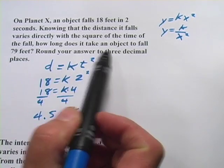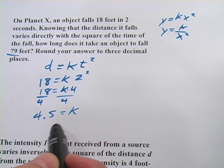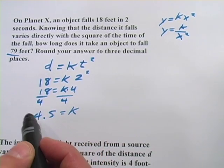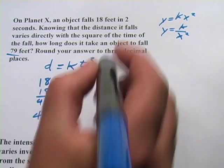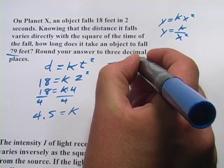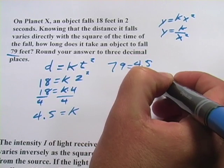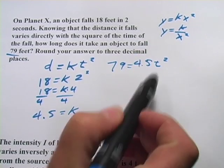The second part of this problem, it says, How long does it take an object to fall 79 feet? So now that we have k, let's plug that back in. In this case, we have the distance, we're going to solve for time, because they want to know how long. So we have 79 equals k, which is 4.5, times t squared.